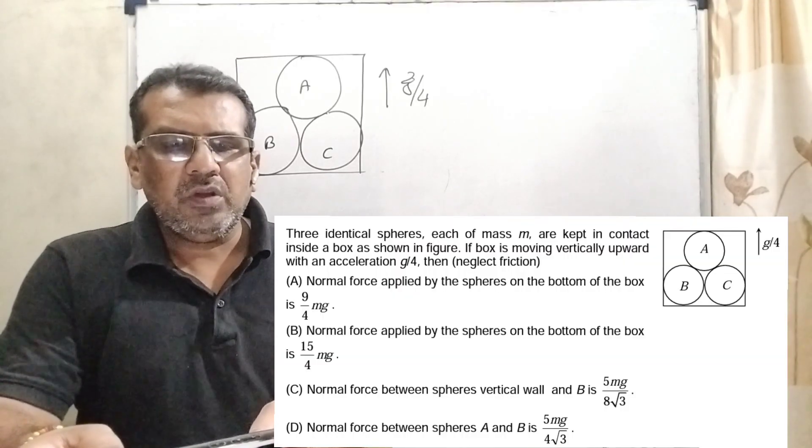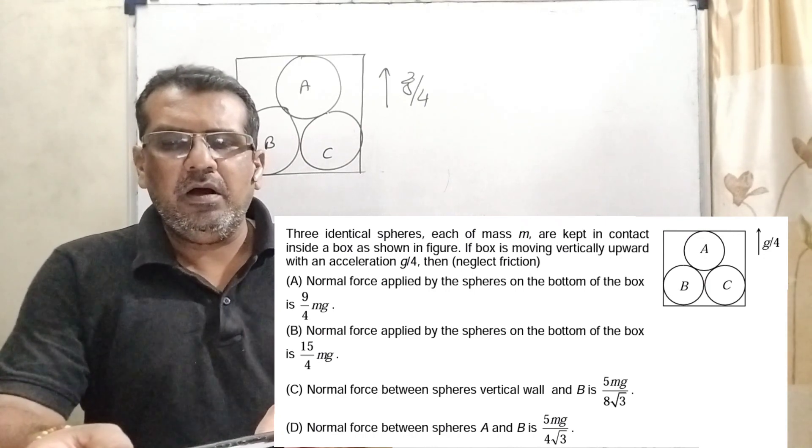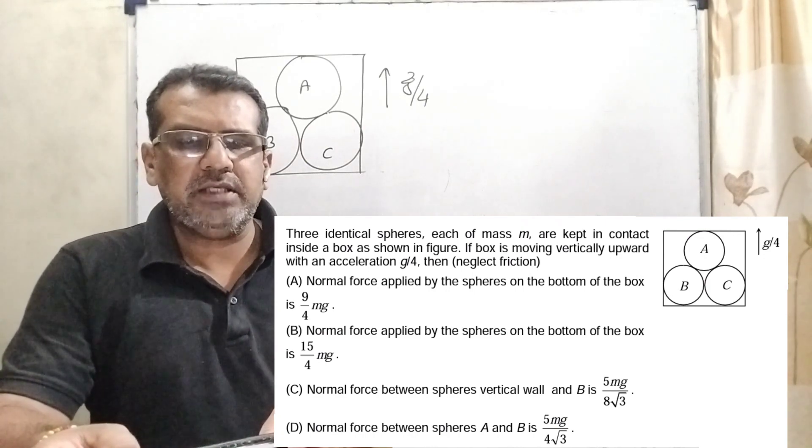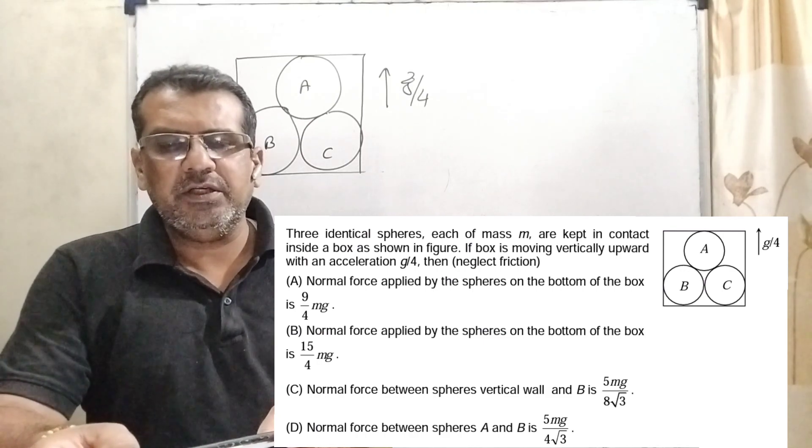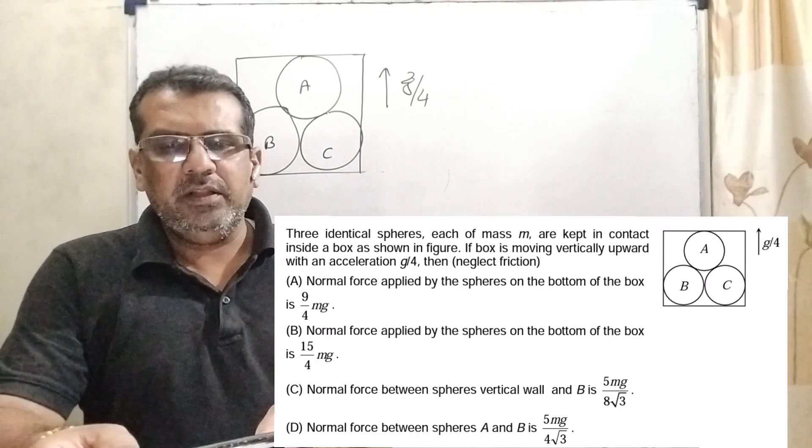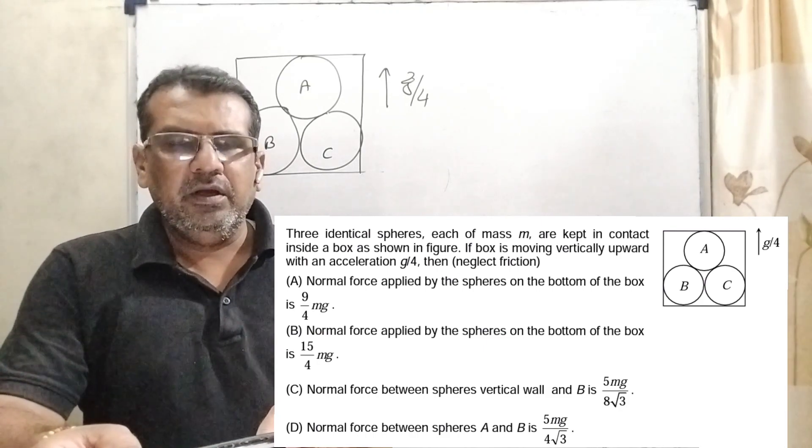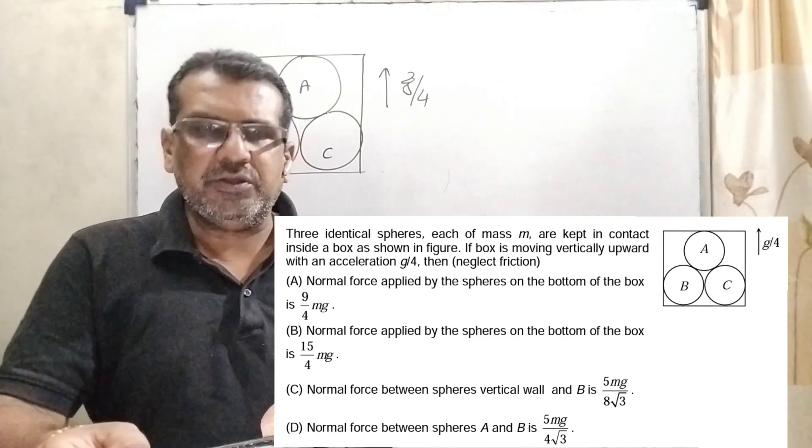Now here is the question. Three identical spheres, each of mass small m, are kept in contact inside a box as shown in the figure. If the box is moving vertically upward with an acceleration g by 4, then neglect friction.